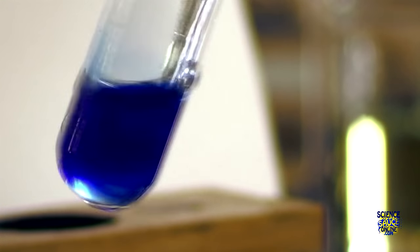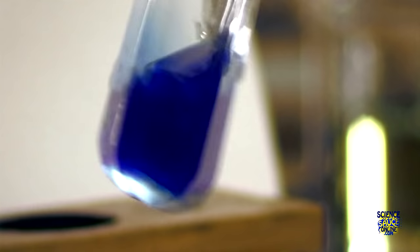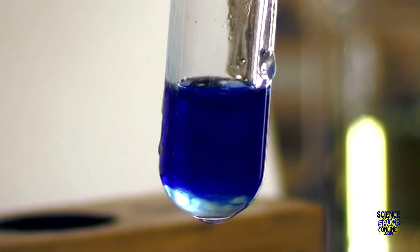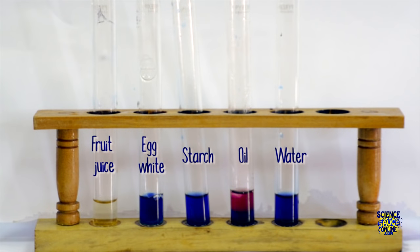Repeat this process for each of your samples. When we make a final comparison we can see that the fruit juice is the only one that has turned the DC-PIP colorless.